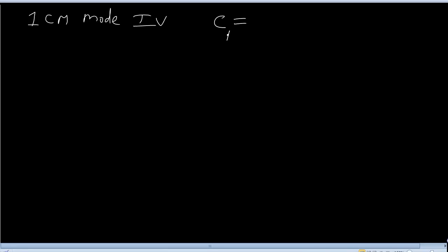Concentration at any time point: Cp is equal to C0 — that is initial concentration — times e to the power of minus kt. So how did we get this equation? What is C0 and what is kt? Let's take a look momentarily.